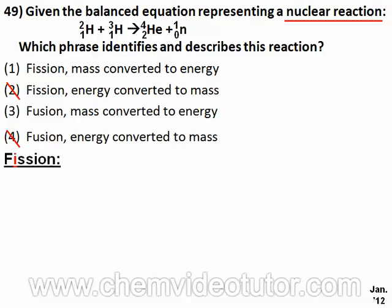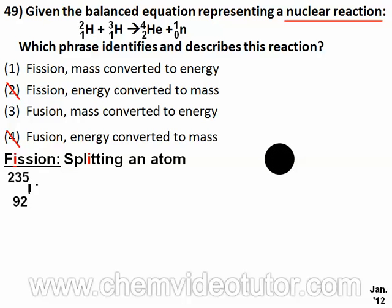Fission involves the splitting of an atom. In fission, a heavy nucleus such as uranium gets bombarded by a high energy particle such as a neutron, causing it to split or break apart into smaller nuclei, in this case represented by barium and krypton.